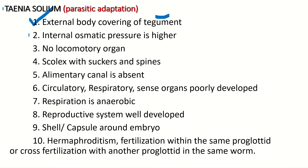Second, the internal osmotic pressure of this organism is higher than the surrounding host fluid or tissue, and the pH range is about 4 to 11. There are no locomotory organs found in these organisms. Cilia or other types of locomotory organs are not found because they have no use for locomotion in this organism.